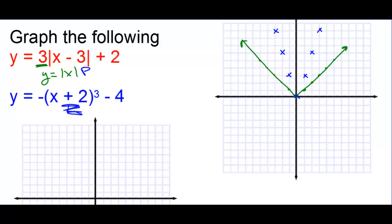We're going to go right 3 and up 2. So for each point, we move right 3 and up 2. This is the transformation right there.